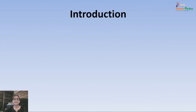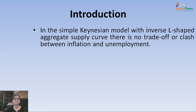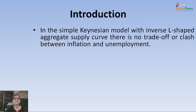Before understanding what exactly is the Phillips Curve, let me take you back to the Aggregate Supply Curve which we have already introduced. When we tried to find the shape of the Aggregate Supply Curve, we had seen two schools of thought — one was Keynes and the other was the classical school. Keynes talked about an Aggregate Supply Curve which is inverse L-shaped, and the modern Keynesian economist described one made up of three ranges.